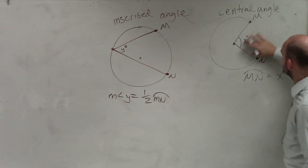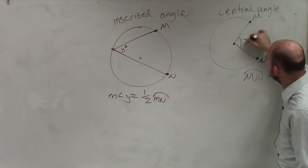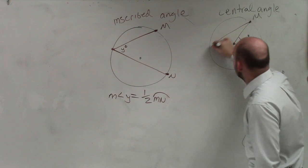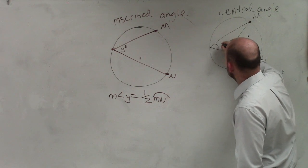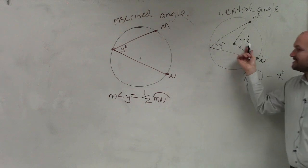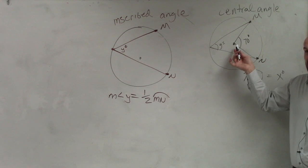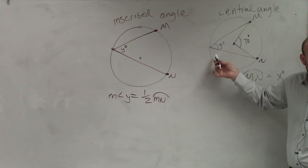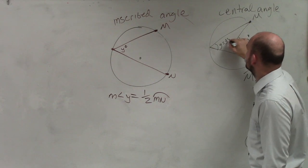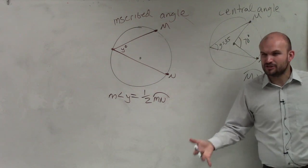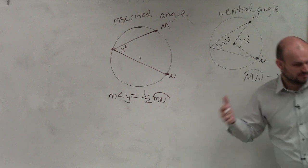Let's put it into perspective with an example. If the arc is 70 degrees, the central angle would be 70 degrees, but the measure of the inscribed angle would be 35 degrees. Does that make sense?